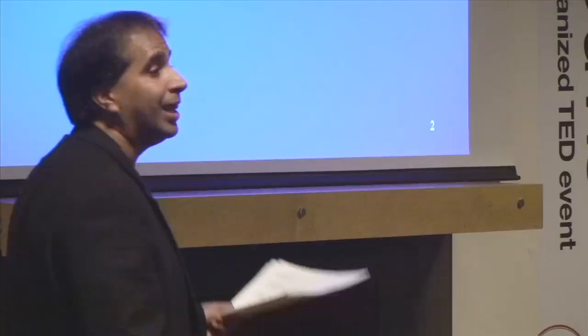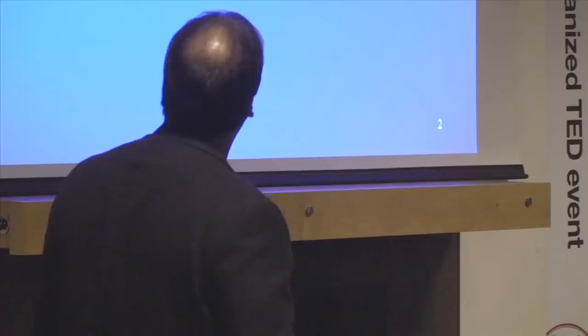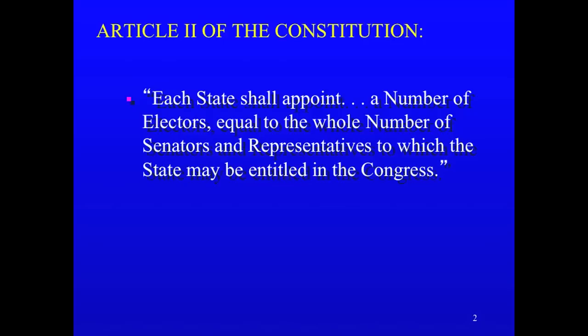That term actually doesn't appear in the Constitution. The Constitution refers to electors, a group of whom together pick the president. In Article 2, we see that the electors in this so-called Electoral College are chosen by each state. It's a very decentralized system. Each state gets a number of electors equal to the number of House members from that state, plus two senators, because every state has the same representation in the Senate.